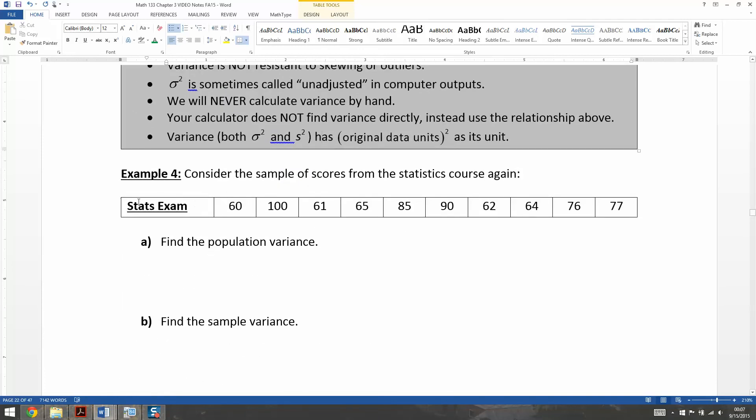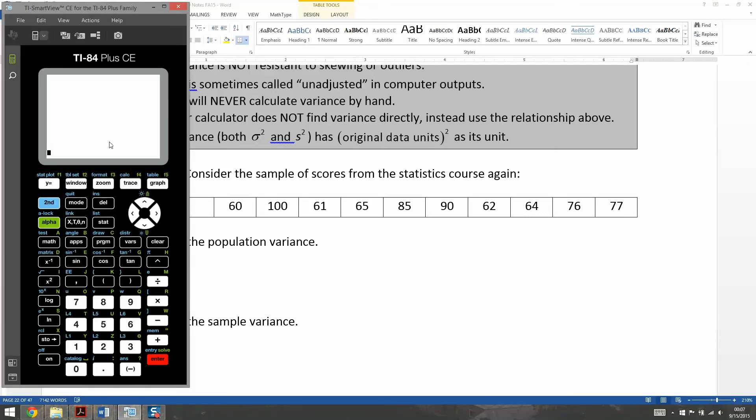All right, so let's consider this stats exam yet again. I think this is the last time. So we're going to find the population variance and the sample variance. So let me pull up the calculator. And I've lost our data set, so let me run it again. So stat, calculate, one variable. My menu system's being a little weird. One variable stat, I'm going to go down to calculate, enter.